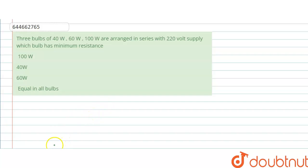We have a question: three bulbs of 40 watt, 60 watt and 100 watt are connected in series with 220 volt supply. Which one has the minimum resistance?